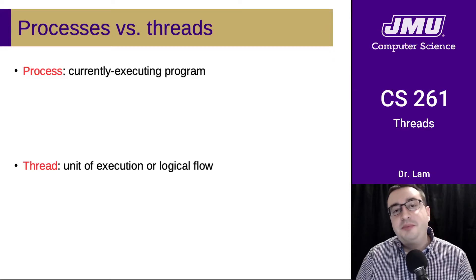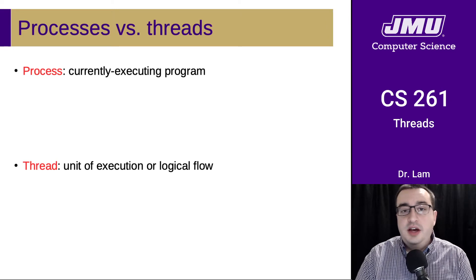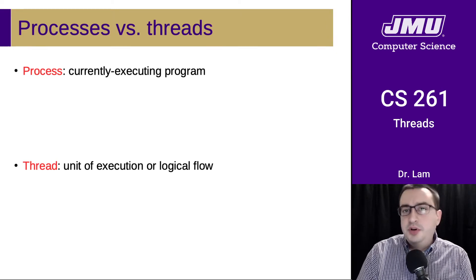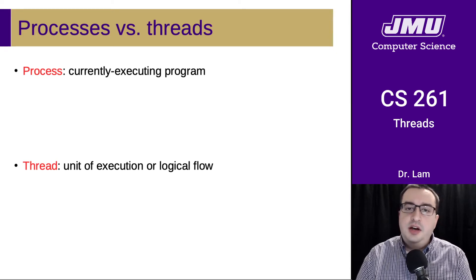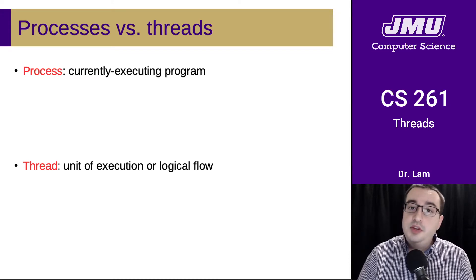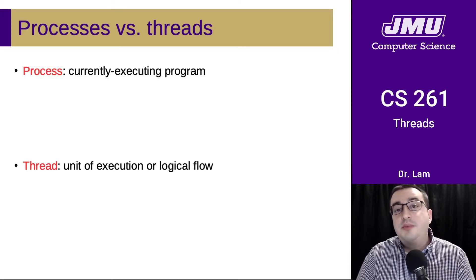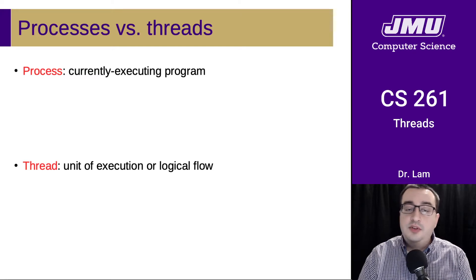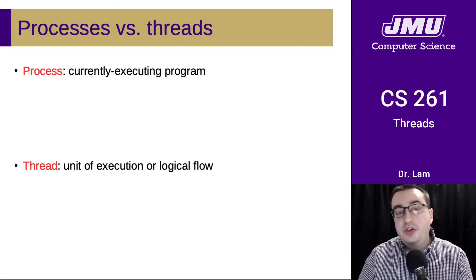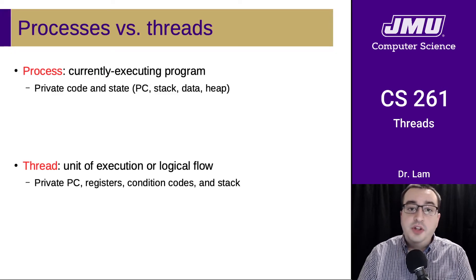Let's wrap all this up by summarizing what we've learned about processes and threads and how they differ, and put all this into context of the things we've studied this semester. A process is a currently executing program, whereas a thread is a unit of execution or a logical flow.